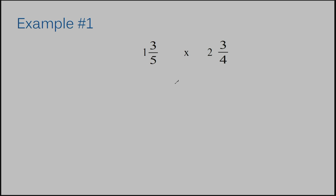Here's example number one. We need to make these mixed numbers into improper fractions. So we are going to multiply here, add here, and go in a clockwise direction. Five times one is five, five plus three is eight. Eight becomes my new numerator, and five remains my denominator.